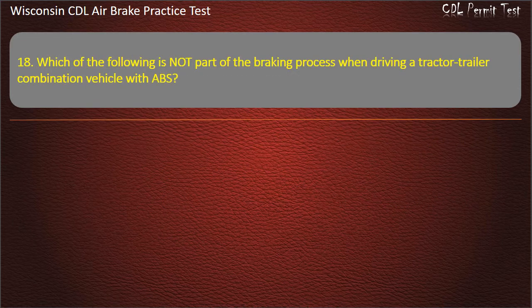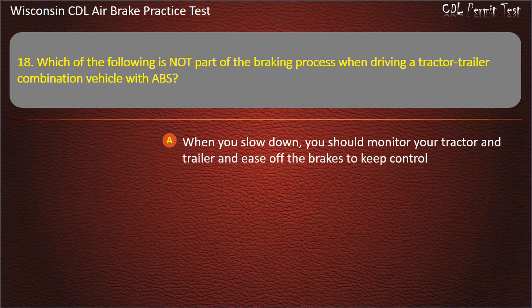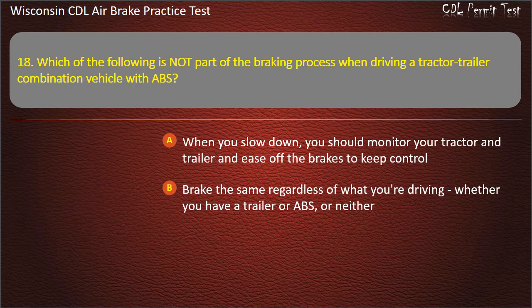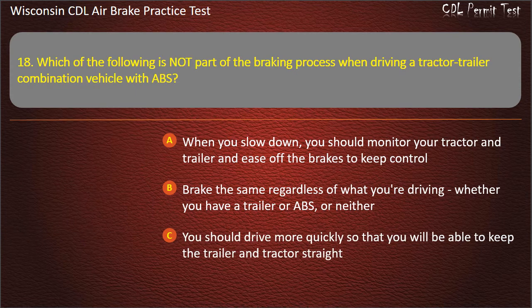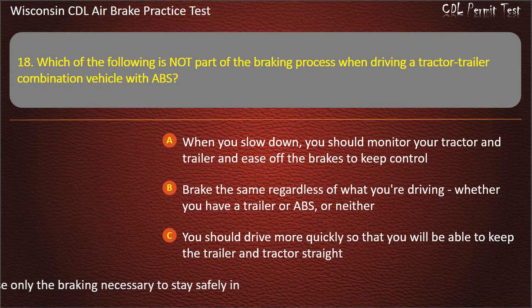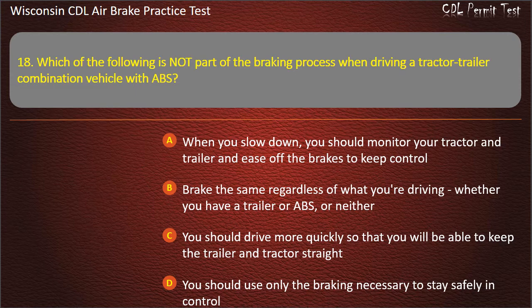Question 18. Which of the following is not part of the braking process when driving a tractor-trailer combination vehicle with ABS? When you slow down, you should monitor your tractor and trailer and ease off the brakes to keep control. You should drive more quickly so that you will be able to keep the trailer and tractor straight. You should use only the braking necessary to stay safely in control. Answer: You should drive more quickly so that you will be able to keep the trailer and tractor straight.